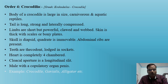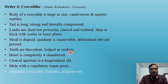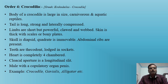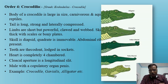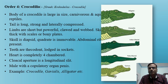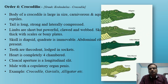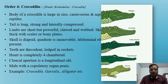Teeth are thecodont (lodged in sockets). The heart is completely four-chambered — a key distinguishing feature from other reptiles. The cloacal aperture is a longitudinal slit. Males have a single copulatory organ (penis). Examples include crocodiles, gharials, and alligators — commonly all called crocodiles but showing distinct differences from one another.